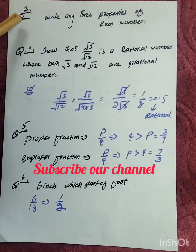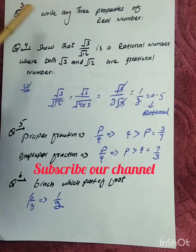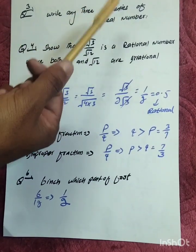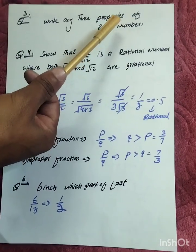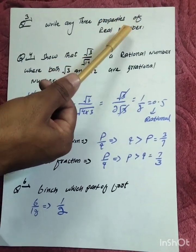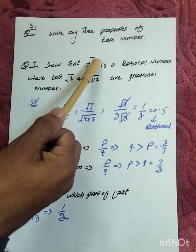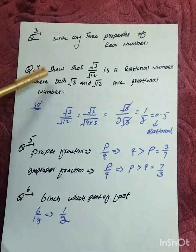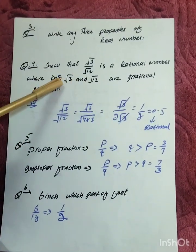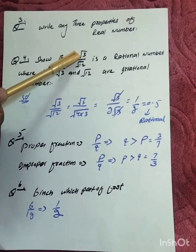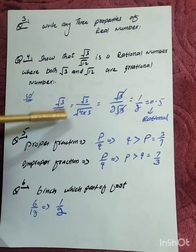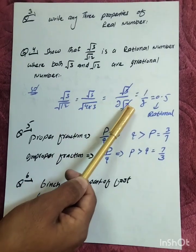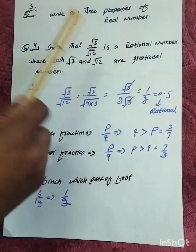Question number 3 from the review exercise. Question number 4 asks to show that square root of 3 divided by square root of 12 is a rational number. The example shows that both square root of 3 and square root of 12 are irrational numbers. Simplifying the expression: square root of 3 divided by square root of 12 equals 1 divided by 2, which equals 0.5, a rational number.